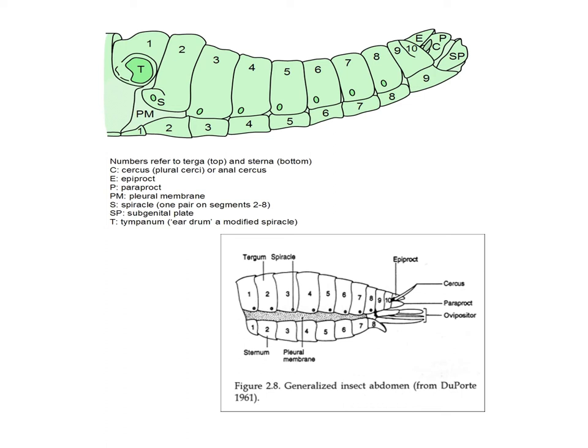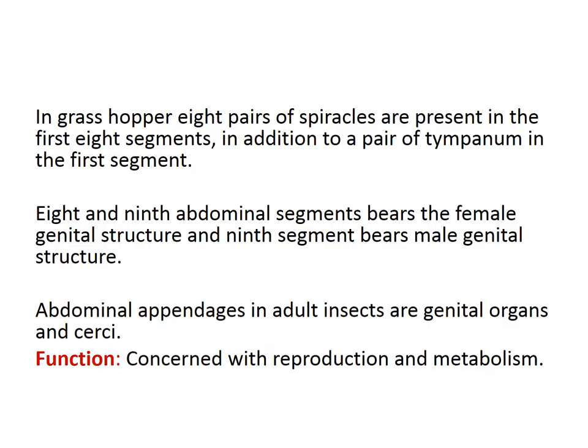The next diagram, figure 2.8, shows a generalized insect abdomen. Here we can see 10 segments, the cerci, the paraprocт, and the ovipositor. The pleural area can also be seen between the tergum and sternum. In grasshopper, 8 pairs of spiracles are present in the first 8 segments, in addition to a pair of tympanum in the first segment. The 8th and 9th abdominal segments bear female genital structures, and the 9th segment bears male genital structure. Abdominal appendages in adult insects are genital organs concerned with reproduction.